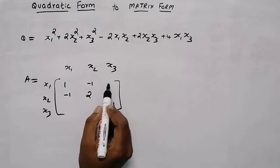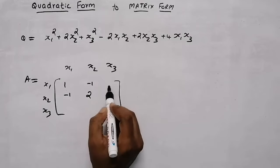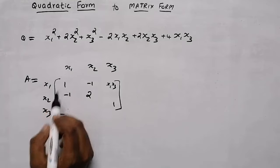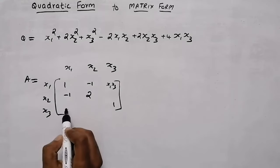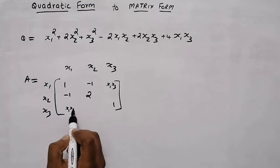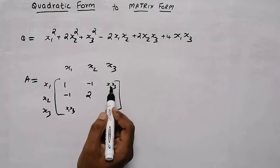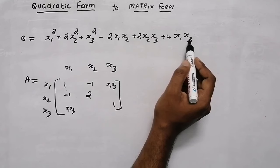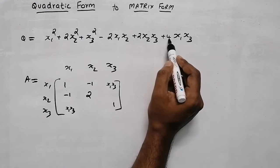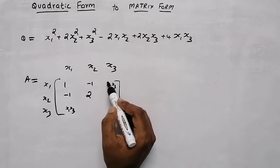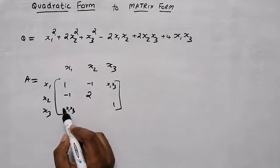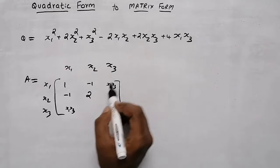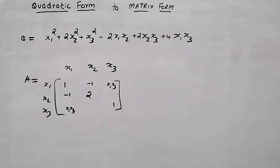Now, this element is a product of x1 and x3. Here also, we can see x3 into x1, same as x1·x3. So in two places we have the same product. The coefficient of x1·x3 is 4, so we need to divide it — half of 4 is 2, we give 2 here and 2 here.